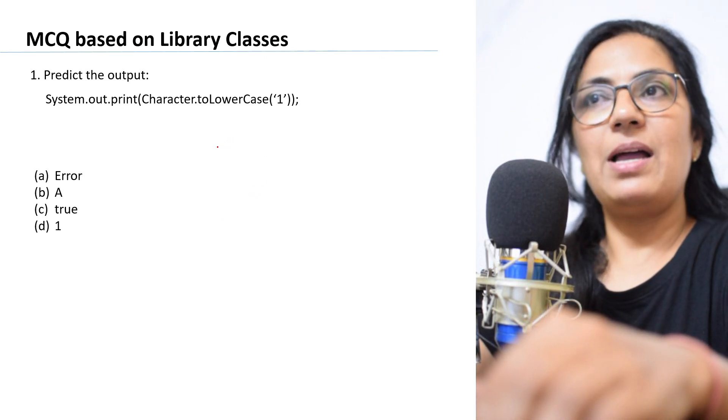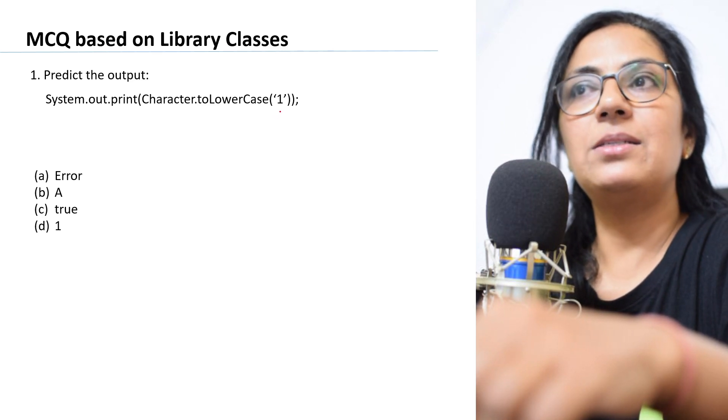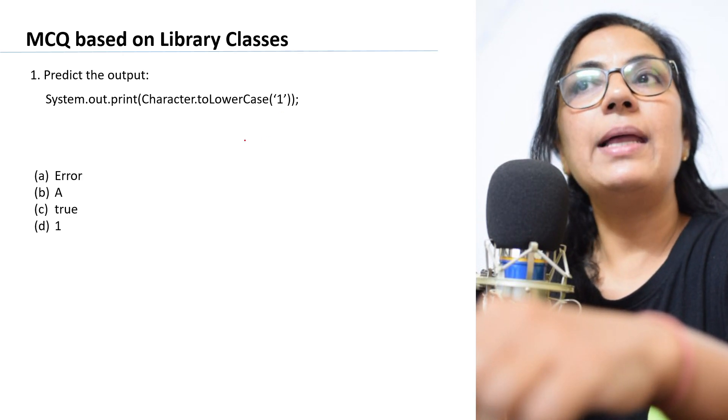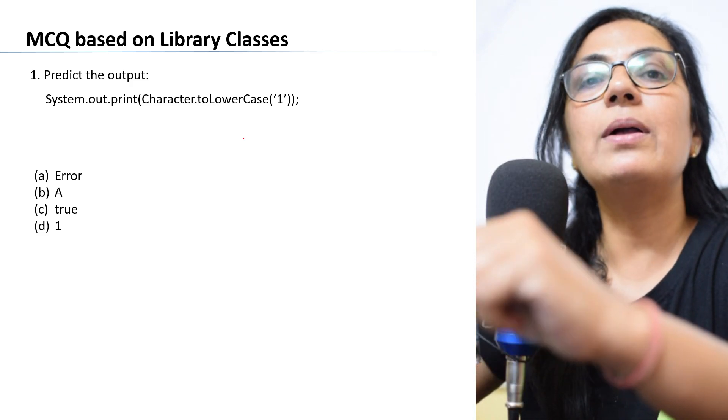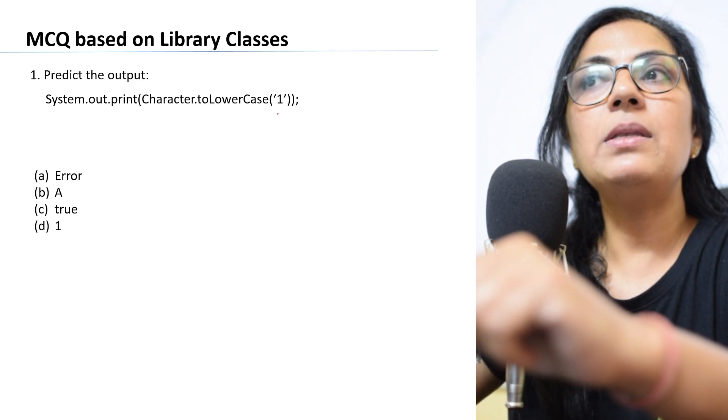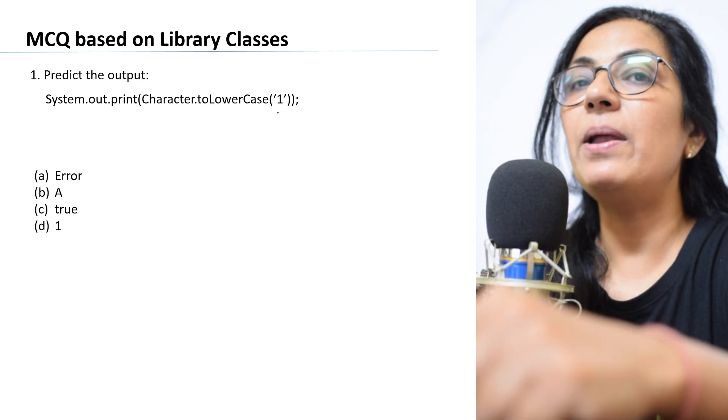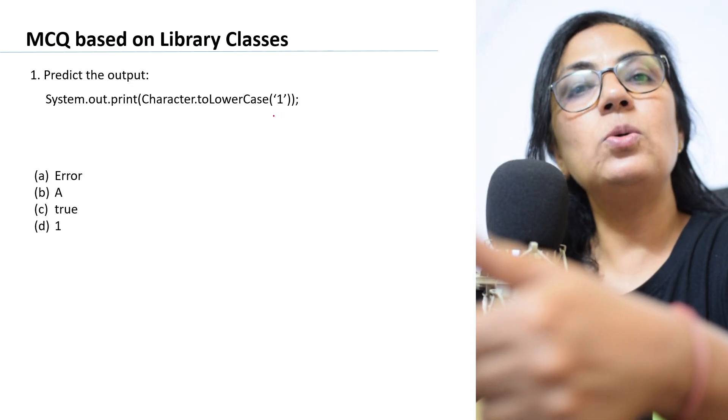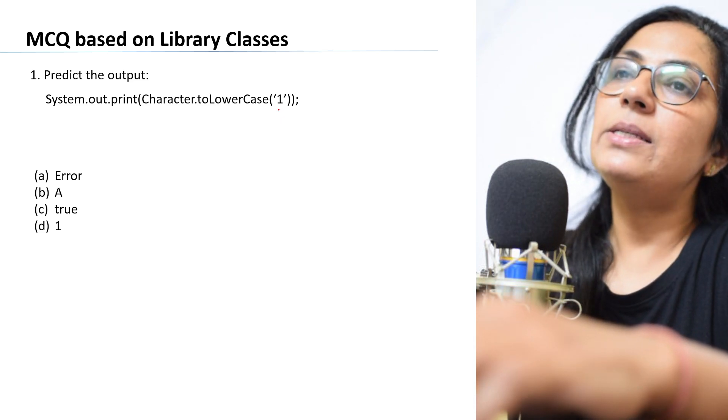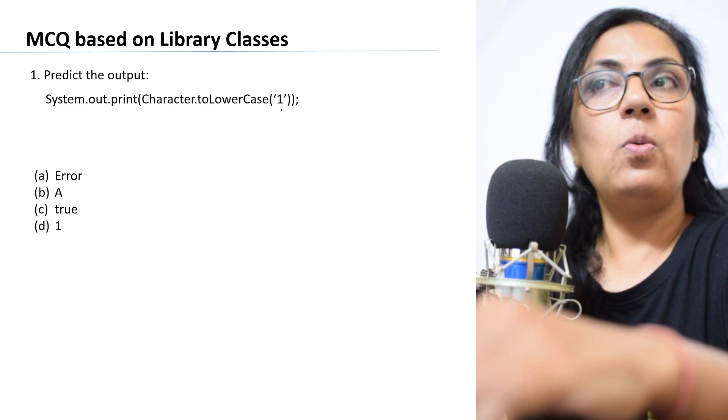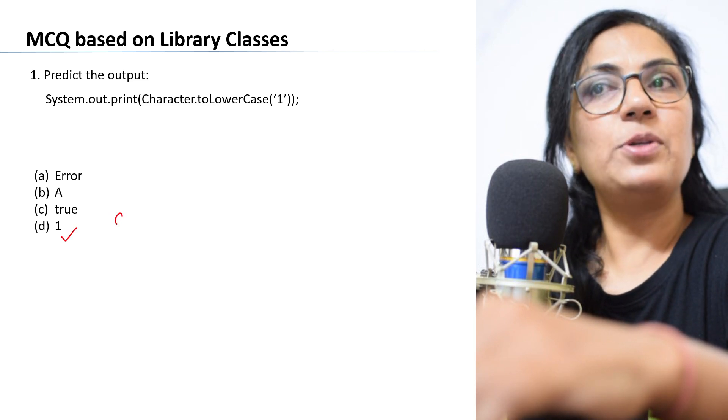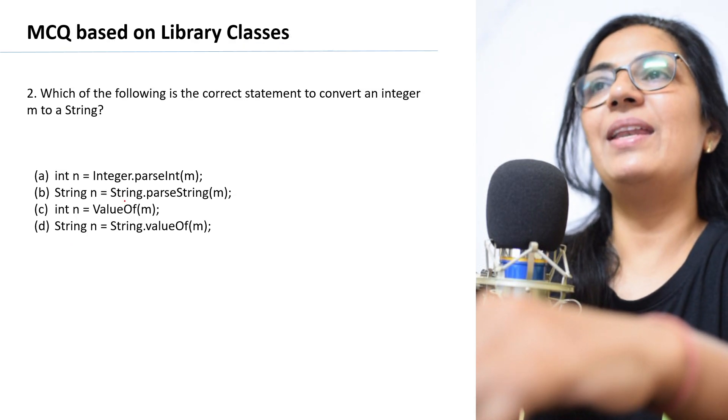Predict the output: System.out.print character dot toLowerCase, and the value given is 1 within single quotes. Children, we know that character dot toLowerCase is a function used to convert uppercase letter into lowercase. If the parameter given here is an uppercase letter, it converts to lowercase. For all other values, it returns the same value. So 1 is not an uppercase letter. What will be the output? It will return 1 only. Option D is the correct answer.